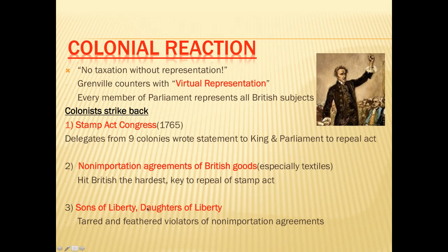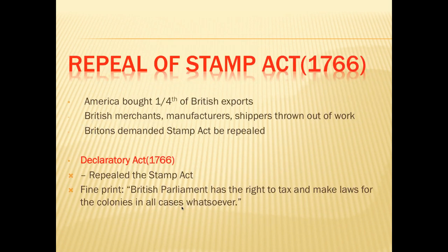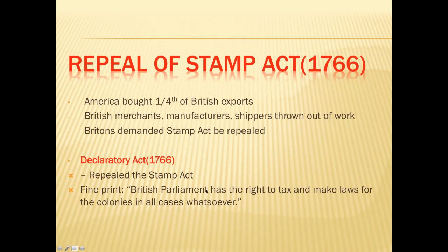The British repealed the Stamp Act — America was buying one-fourth of British exports, and people in Britain were losing work. But Britain drew a line in the sand with the Declaratory Act, stating that Parliament has the right to tax and make laws for the colonies in all cases whatsoever. Americans rejoiced at the repeal, but then Charles Townshend became prime minister, promising to 'pluck the feathers from the colonial goose with a minimum of squawking' — getting taxes from the colonies without them fighting back.